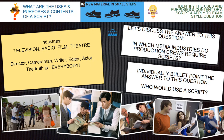It could be television, it could be radio, it could be film, it could be theatre. The director, the cameraman, the writer, editor, actor — truth is everybody. Because the script allows the director, the cameraman, the writer, the editor, and the actor to interpret what the actual scene of the film, radio clip, or theatre production is going to look like and what the dialogue is going to be. Normally, the script would be the first document that would be created if you were going to plan out a film scene.